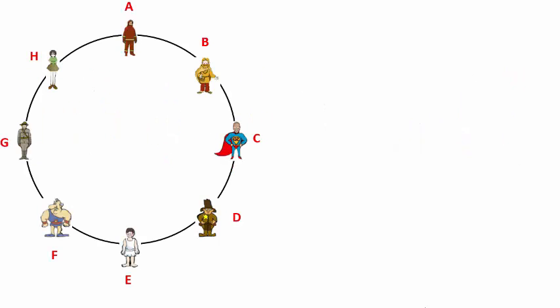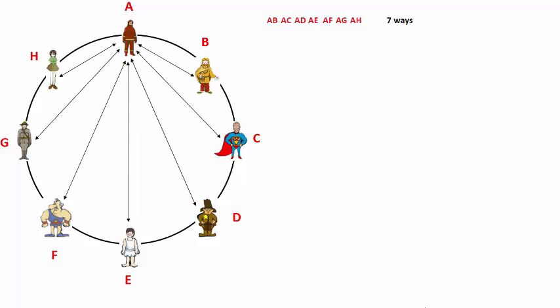You can see that I've labelled each character A, B, C and so on. What we can do is choose one person to begin with to use as a reference point. Let's choose person A. We want person A to shake hands with person B and then person C and so on all the way up to person H. This is one way of showing that and there are seven ways that person A can do that.